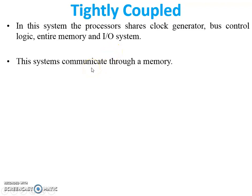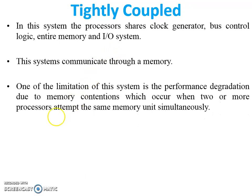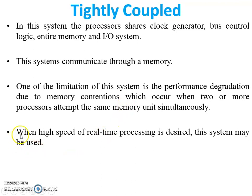The system communicates through memory. A disadvantage — or limitation — of the system is performance degradation due to memory contention, which occurs when two or more processors attempt to access the same memory unit simultaneously. We can use a large number of memory modules, but this limitation will not be solved in the tightly coupled system.